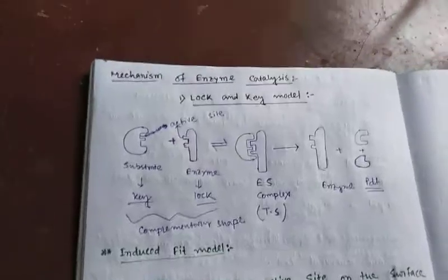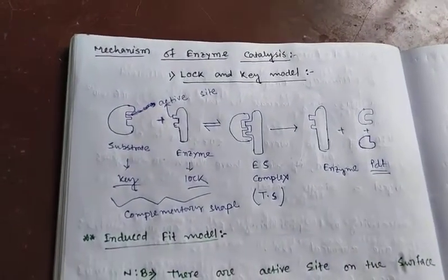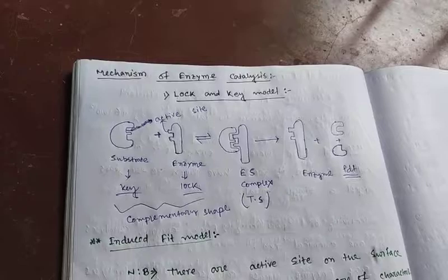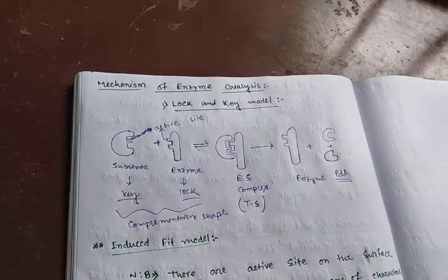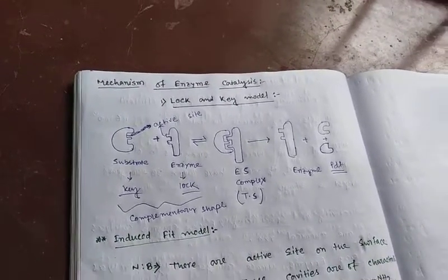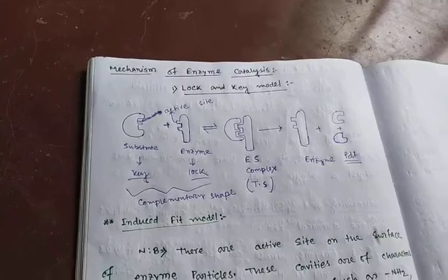There is a lock-and-key model, which is studied in Class 11 biology, that explains how an enzyme binds to its specific substrate.